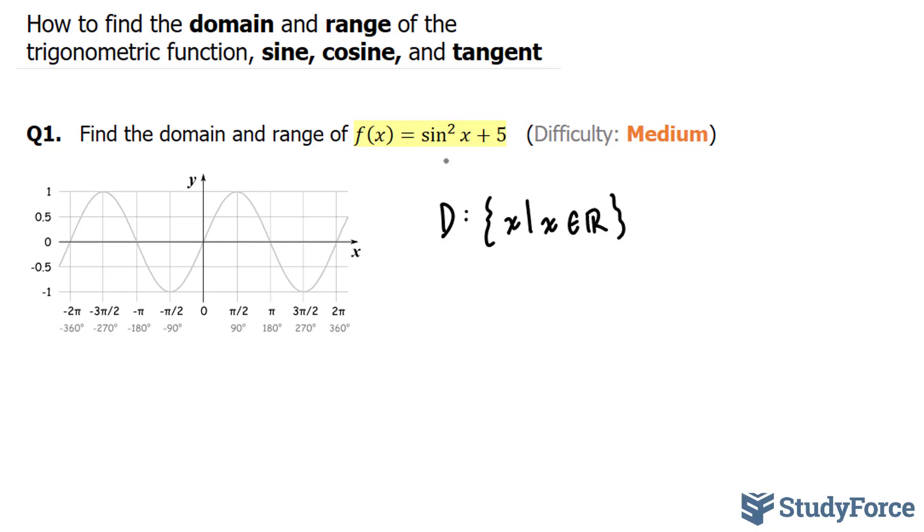The next part is the range. To find the range, which is more tricky, we have to break this function down into two parts. First, let's analyze sin²x. The best mode of action is to look at the maximum and minimum values.